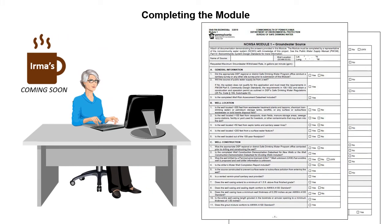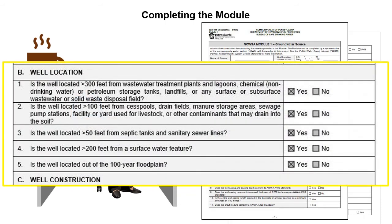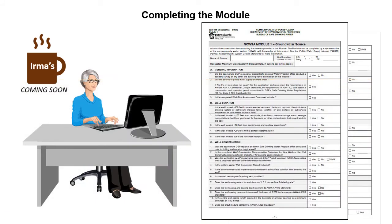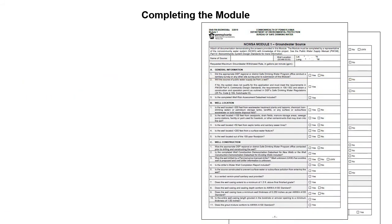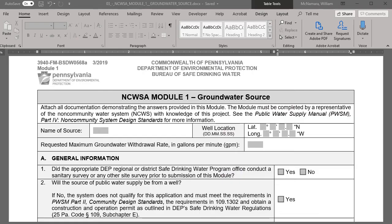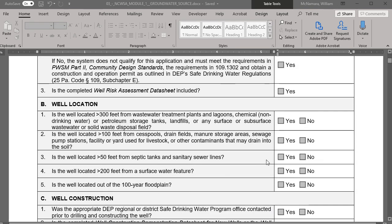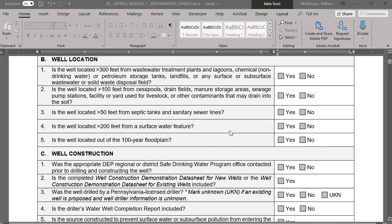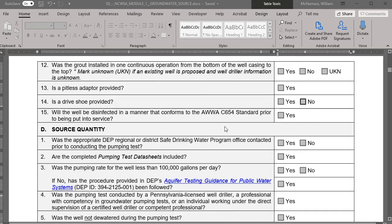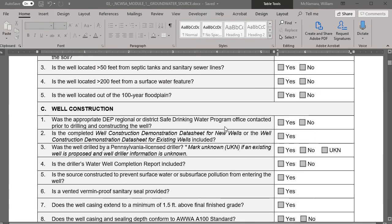This first part of Module 1 includes a series of yes-no questions related to the well. The applicant or the contracted well driller for the new well can complete this part of the module. If you are applying for approval of an existing well, you must also complete this part of the module, and you will most likely need assistance from the original well driller. The questions are general in nature, but very important, because it provides DEP the ability to quickly assess the application package and determine if everything is provided to be able to approve the well for operation.